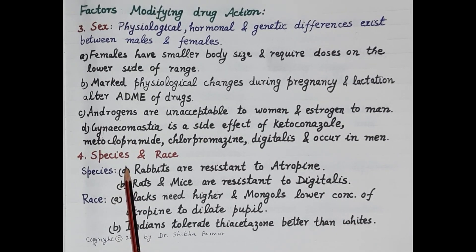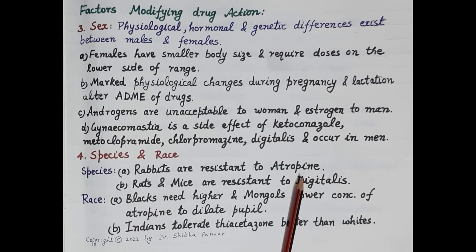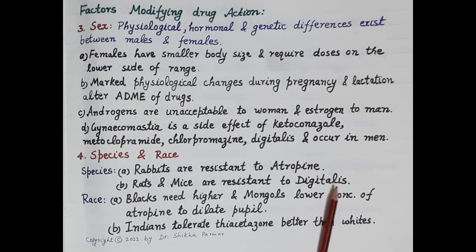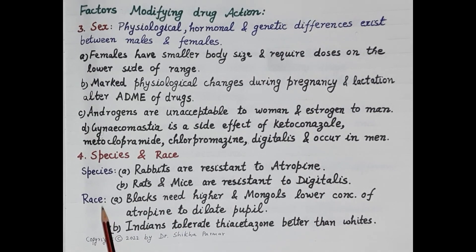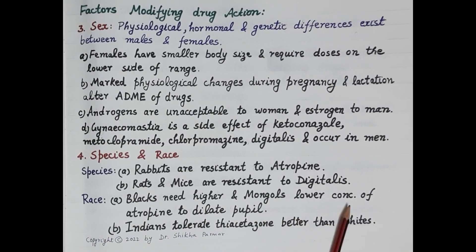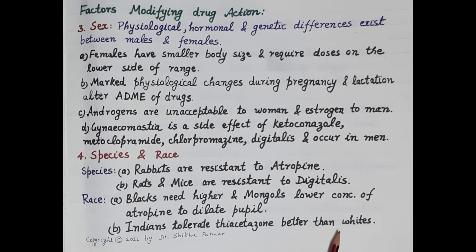The fourth factor is species and race. Different animal species respond differently to some drugs — for example, rabbits are resistant to atropine, and rats and mice are resistant to digitalis. Human races also exhibit differences: blacks need higher and Mongols lower concentrations of atropine to dilate the pupil. Indians tolerate thiacetazone, an anti-tubercular drug, better than whites.